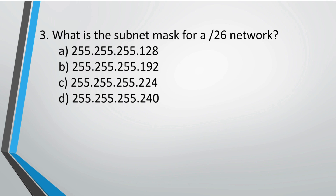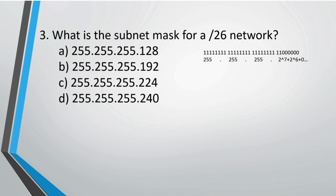Question 3: What is the subnet mask for a /26 network? A /26 network means the first 26 bits are reserved for the network and the remaining bits are for hosts. The first three octets are all ones in binary, equal to 255 in decimal. In the fourth octet, the first two bits are one and the remaining six are zero, which equals 192 in decimal. The correct option is B: 255.255.255.192.